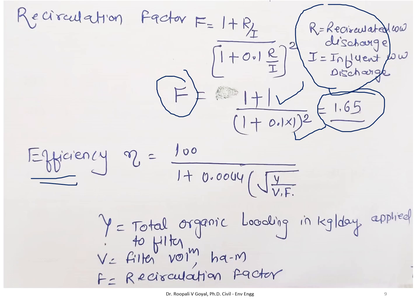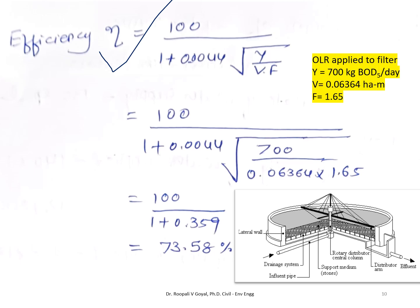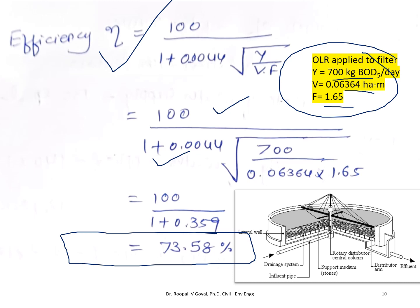The efficiency formula is: E = 100 / (1 + 0.044 × √(Y / (V × F))), where Y = total organic loading in kg/day applied to filter = 700 kg BOD/day, V = volume of filter in hectare-decimetres = 0.06364, and F = recirculation factor = 1.65. Substituting all values gives efficiency = 73.58%, meaning 73.58% of BOD is removed in the trickling filter.